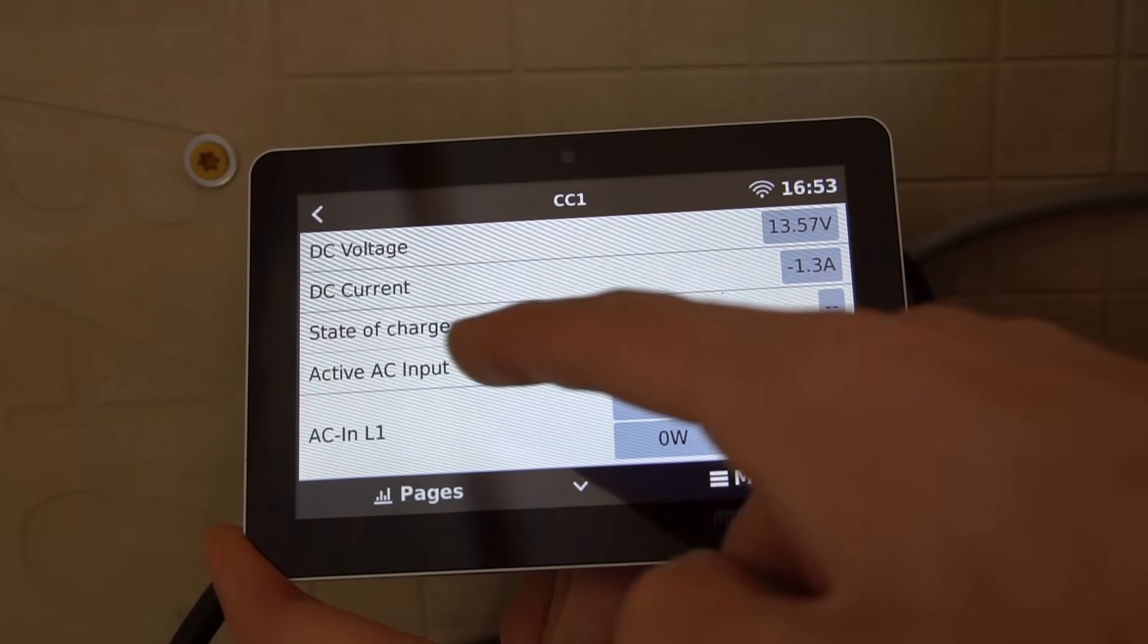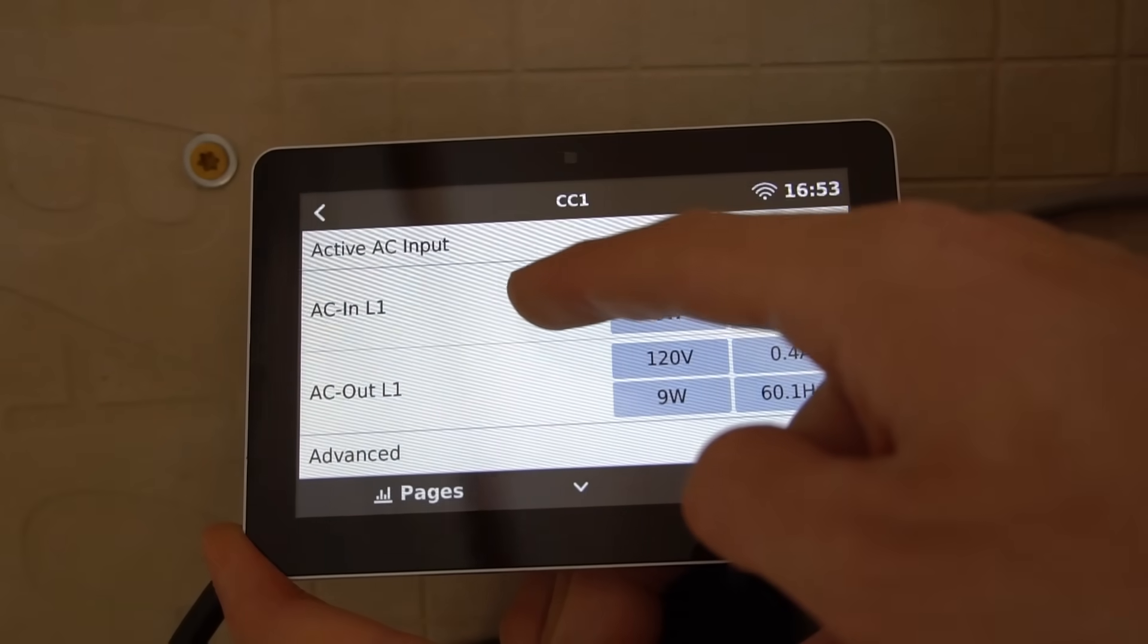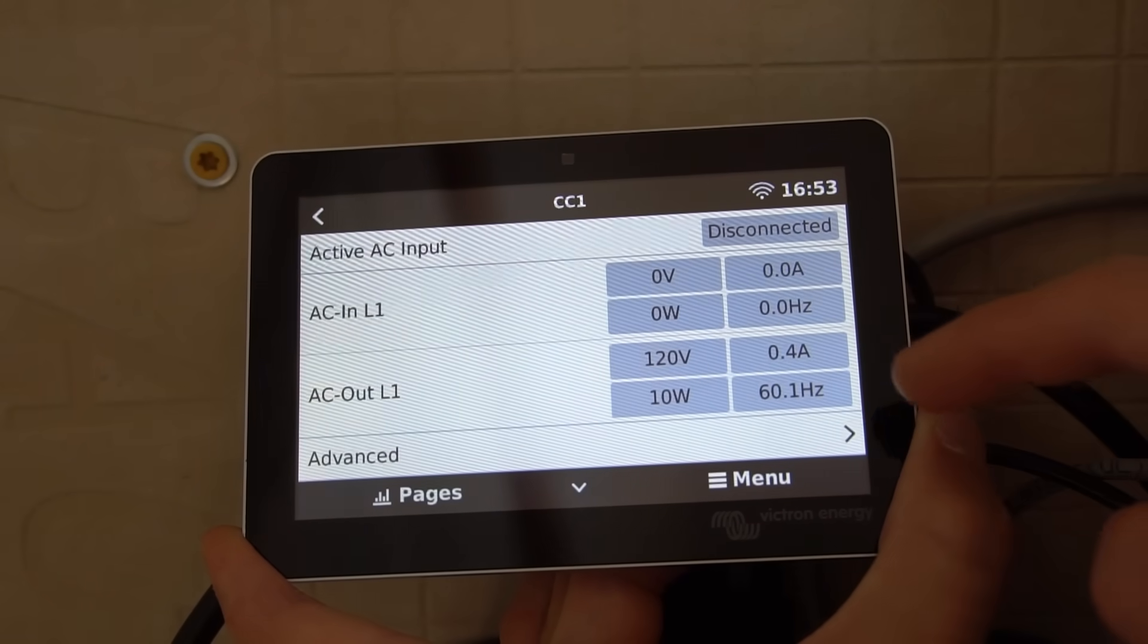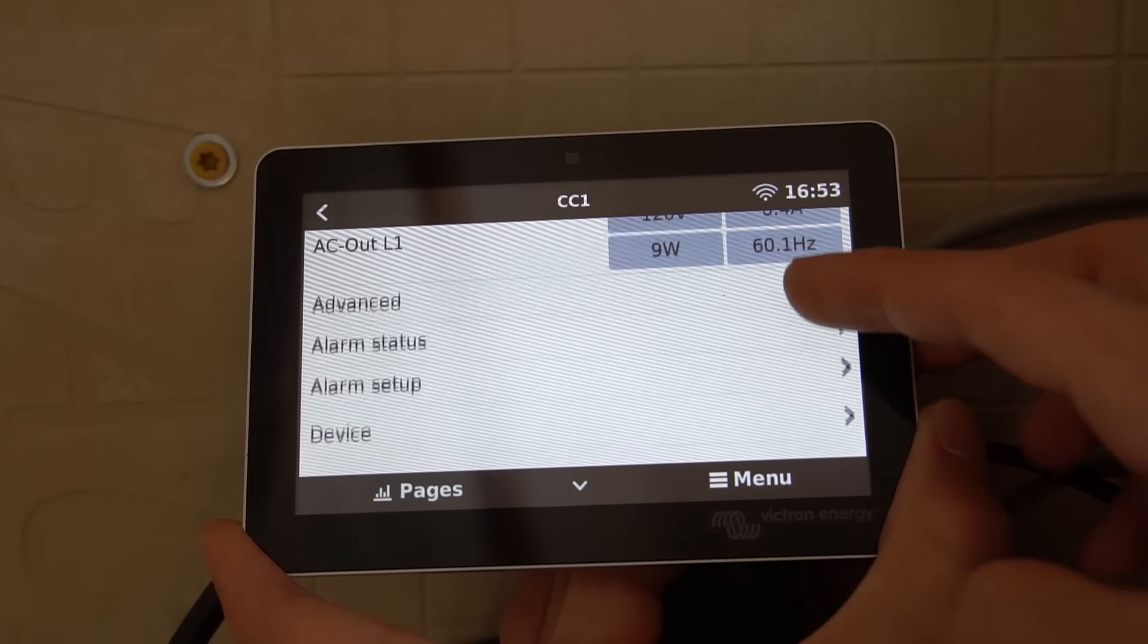And it shows the DC voltage at the inverter input, the DC current. It does not show the state of charge. And it also can show you the stats on AC line in and AC line out for the L1. There's another output and that's different, but that's for advanced users only.